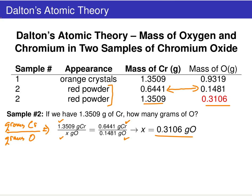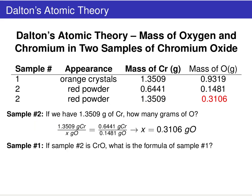As long as he knew what kind of compound it was — for instance, it's chromium oxide, a red powder — he was always able to fill in blanks on tables like this. For the next question, let's say sample two has exactly a one-to-one ratio of one chromium atom for every one oxygen atom.